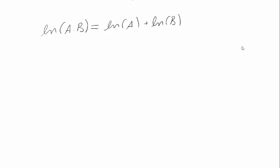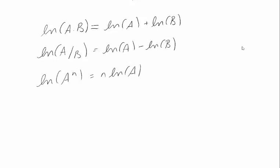We also learned some rules for dealing with logarithms. If I have the log of a product, I can rewrite it as the sum of the logs of the things I was multiplying. Similarly, if I have the log of a ratio, I can pull apart that ratio and write it as log a minus log b. And if I have log of something to a power, I can pull down the power. Log should exist for all of these things, so in particular a and b should be positive.